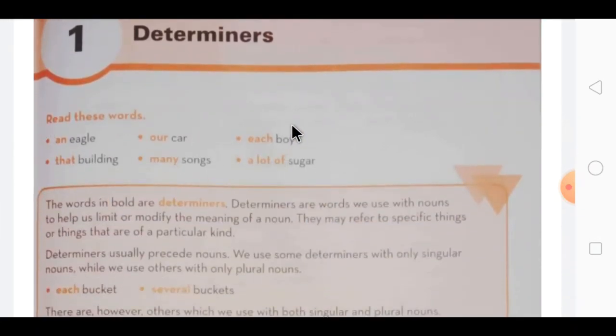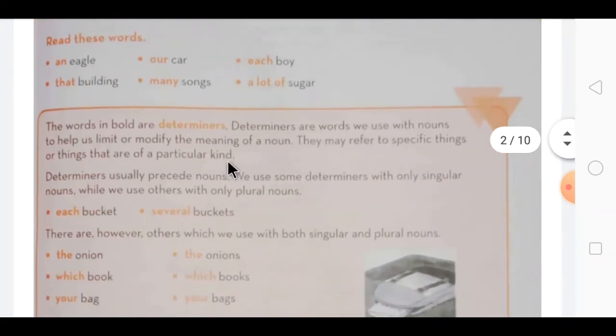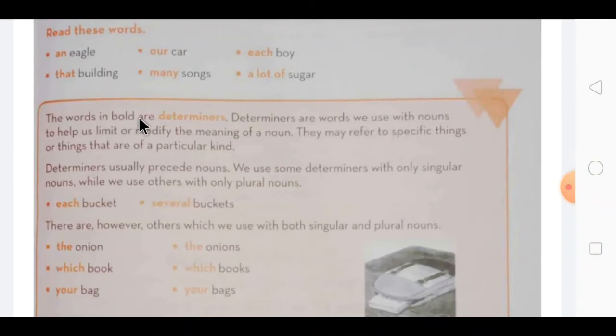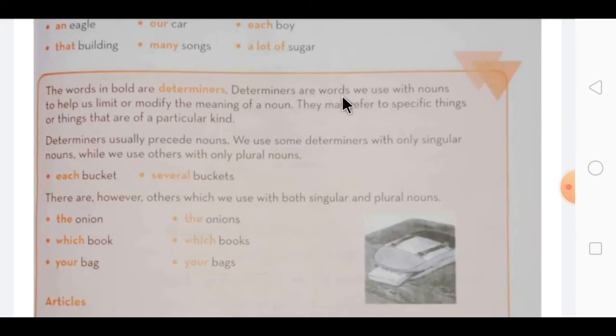You can see over here there are few words which are given and some words are highlighted also. Now according to these words, here some explanation is given. We are going to start with that. The words in bold are determiners. You can see our bold letter words over here, they are called determiners. Determiners are words we use with nouns to help us limit or modify the meaning of nouns. They may refer to specific things or things that are of a particular kind.